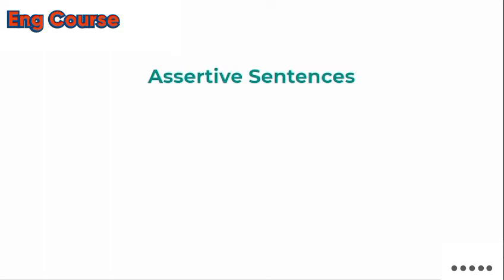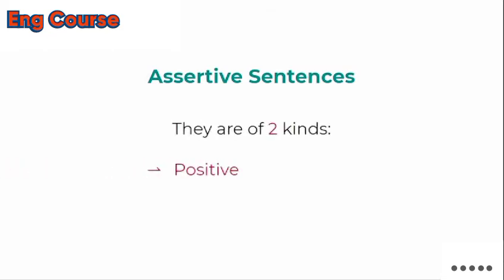For example: 'There is a rainstorm out there.' 'The match has been won.' 'The storm will not come.' These are examples we call assertive sentences. They are of two kinds: positive sentences and negative sentences.